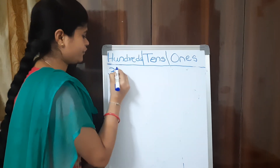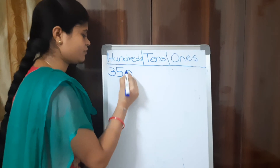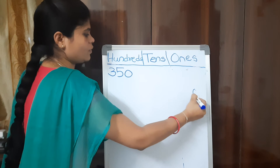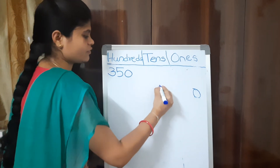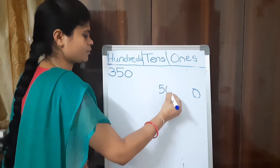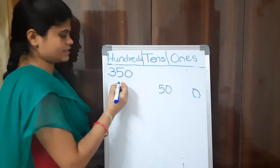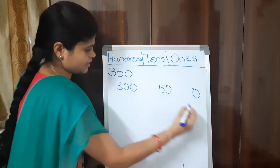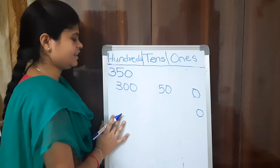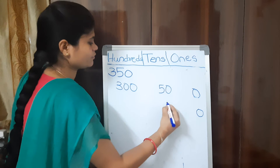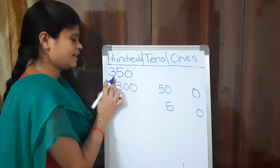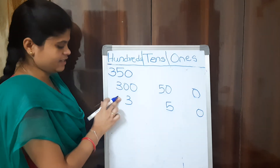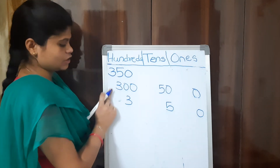Next example: 350. How to write 350 in place values? 0 ones, 5 tens (which is 50), and 3 hundreds. In digits: 0 in 1s place, 5 in 10s place, 3 in 100s place. This is representing 350 in digits, and this is representing in place values.